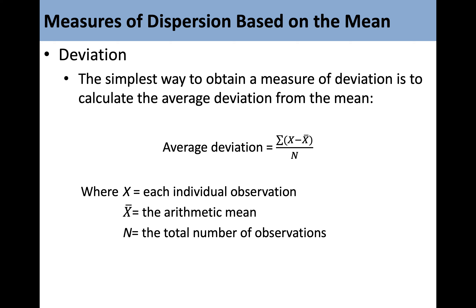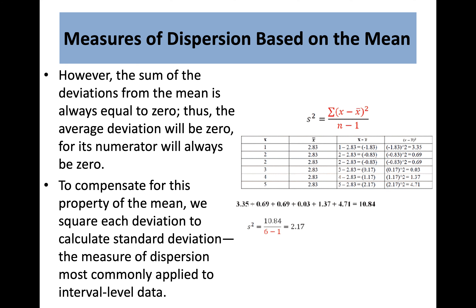The simplest way to obtain a measure of deviation is to calculate the average deviation from the mean. However, the sum of the deviations from the mean is always equal to zero, so the average deviation will always be zero. To compensate for this, we square each deviation to calculate standard deviation — the measure of dispersion most commonly applied to interval level data. Variance and standard deviation are calculated by squaring and summing the deviations, then dividing by the total number of observations. The definitional formula for variance is S-squared equals the sum of (x minus x-bar) squared, divided by n.